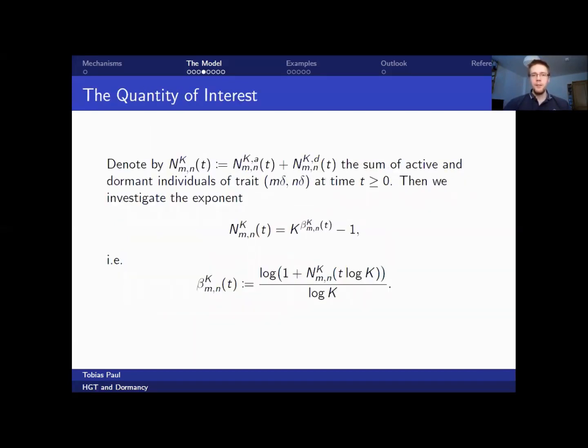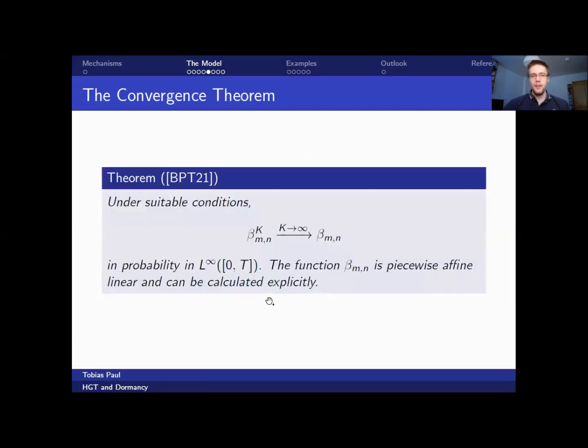Now we are interested in the dynamics of the population sizes as time evolves. And it turns out that a good quantity of interest is the exponent of the carrying capacity K, which appeared in the death rate. Taking the exponent with base K is equivalent to taking the logarithm with base K of the population size. And indeed, this is a good choice. As it turns out that under suitable conditions, these exponents converge as the carrying capacity tends to infinity in probability in L infinity. And we can even explicitly calculate this limiting function.